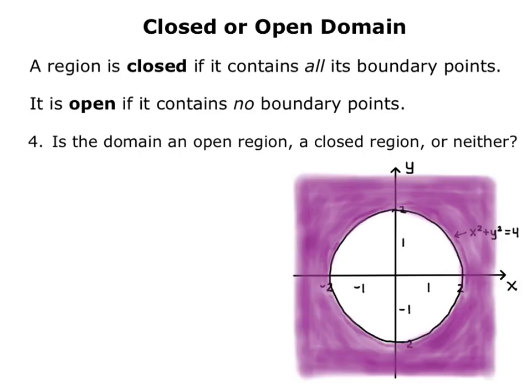In our case, the domain is x squared plus y squared greater than or equal to 4, which is all points on or outside of the circle of radius 2.